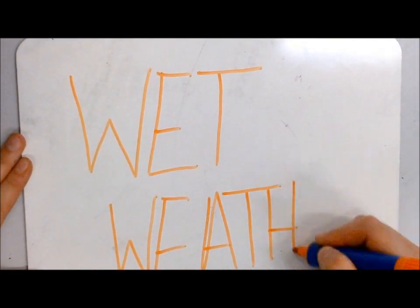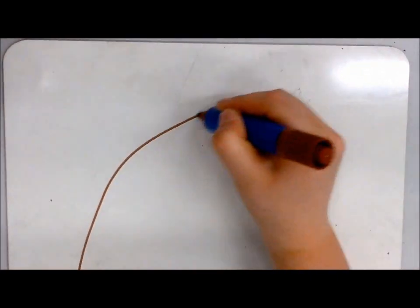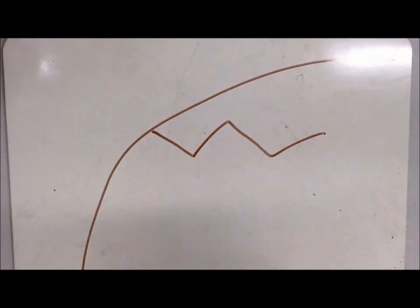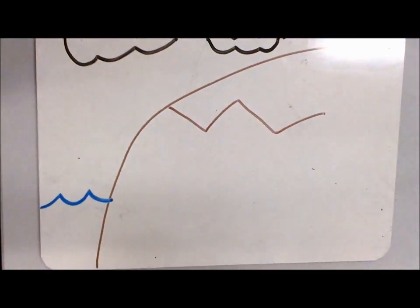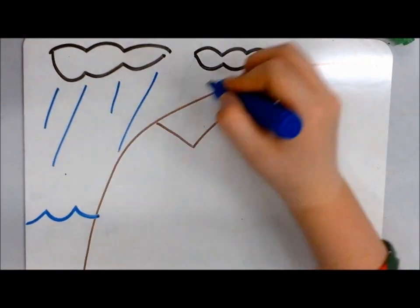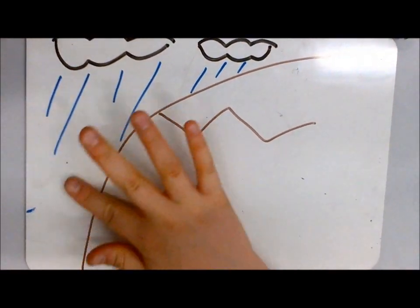This is what happens in wet weather. When it rains, the precipitation itself, as well as water from the channel, seep into the previously formed cracks.